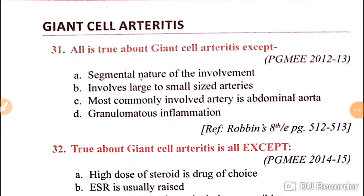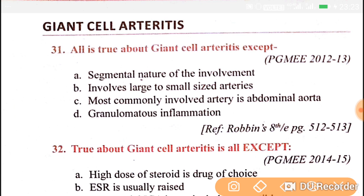Good evening doctors, welcome again. Today our topic is giant cell arteritis, or temporal arteritis. The question asks: all are true about giant cell arteritis except — segmental nature of involvement: yes, correct. Involves large to small sized arteries: yes, this is mainly a large vessel vasculitis. Most commonly involved arteries — abdominal aorta: this is false, so this is the answer. Remember, it involves granulomatous inflammation.